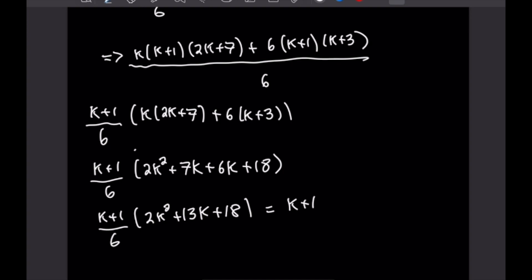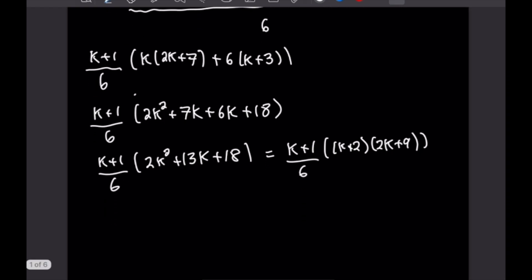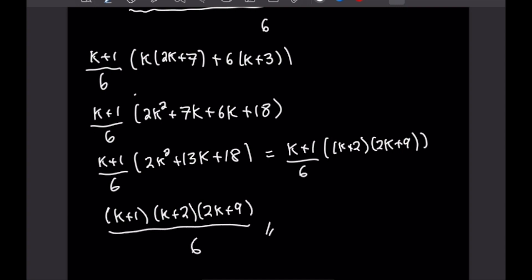This factors as k plus 1 over 6 times k plus 2 times 2k plus 9. We can verify: multiplying k into 2k gives 2k squared, then 9k plus 4k gives 13k, and 2 times 9 gives 18 — so this is the correct factorization. Multiplying k plus 1 over 6 by k plus 2 times 2k plus 9 gives exactly k plus 1 times k plus 2 times 2k plus 9 all over 6, which completes this proof by induction.